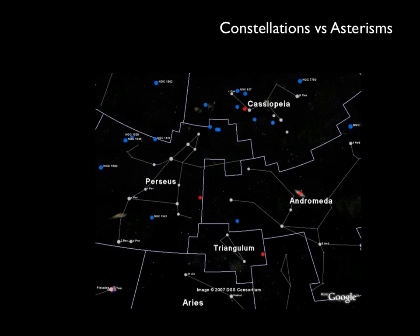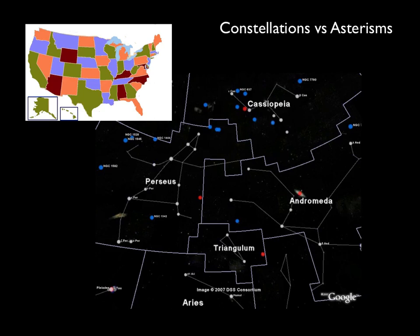In modern maps, the whole sky is divided into parcels, just like our country is divided into states. Each of these regions of sky is called a constellation, whereas the patterns of bright stars like the Big Dipper or Orion are called asterisms.